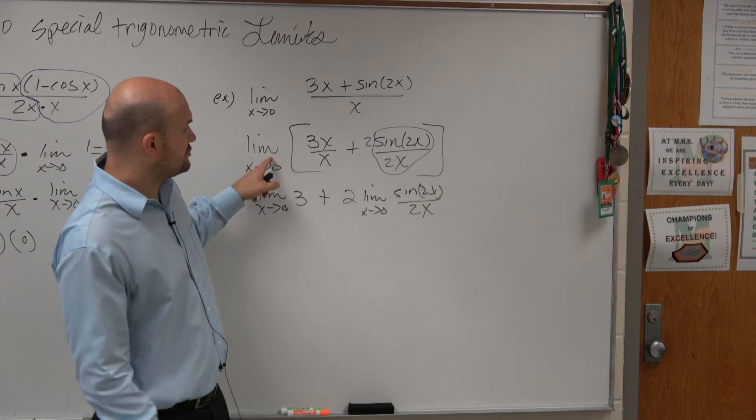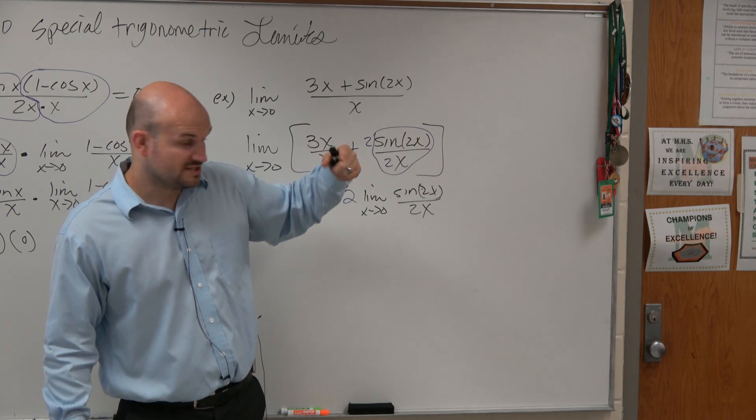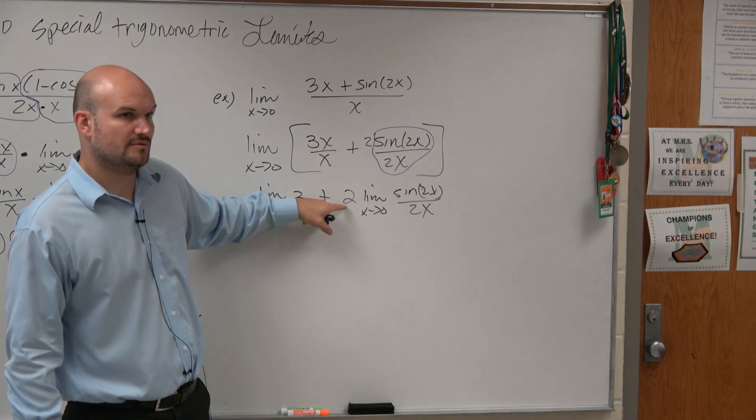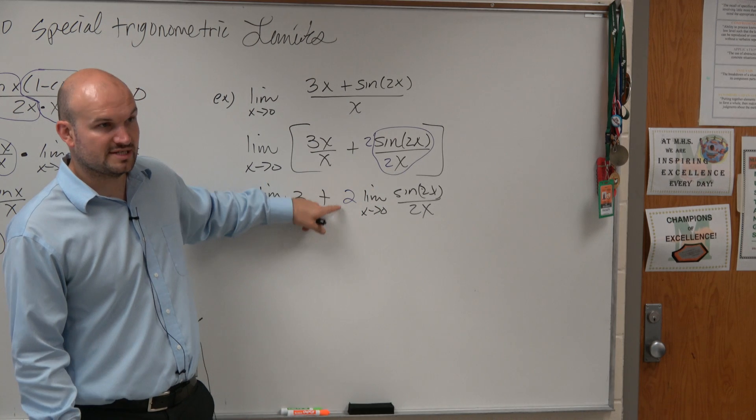So what I did is I distributed the limit, so I took the limit of both of these individually. Also, I took the 2 out, outside the limit, right? Because you can go back to your limit laws that we all wrote down, and you guys can see you can take out a constant.